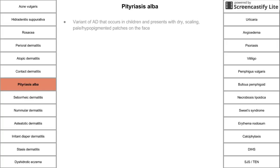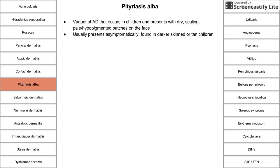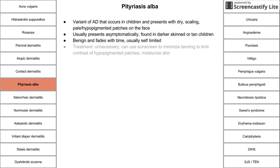Pityriasis alba is a variant of atopic dermatitis in children that presents with dry, scaling, pale or hypopigmented patches on the face. It usually presents asymptomatically and is found more often in darker-skinned or tan children because it's more easily seen on darker skin. Pityriasis alba is benign and self-limited — treatment is usually unnecessary, but sunscreen can minimize the contrast of the skin, and moisturizing helps.